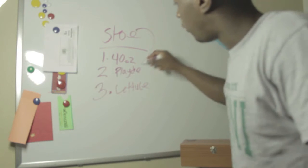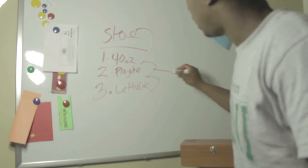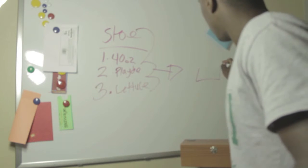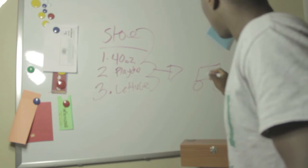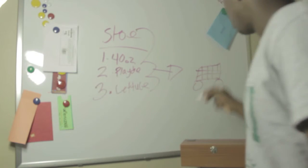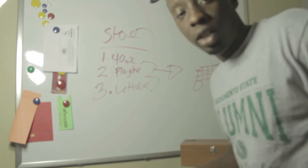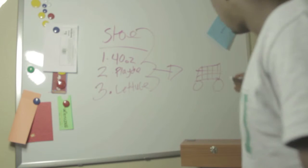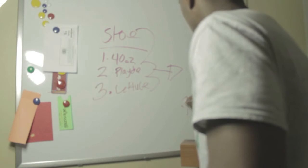So after you go to the stove, you get a 40 ounce, Play-Doh, and some lettuce, you take it to the crib. You take it to the crib so she can babysit all your kids. After you take it to the crib, you take it to the trap.